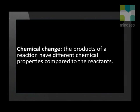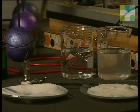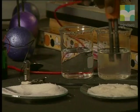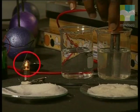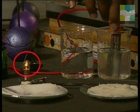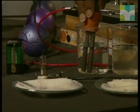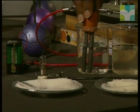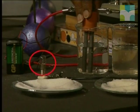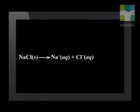We know that in a chemical change, the products of a reaction have different chemical properties compared to the reactants. When sodium chloride is dissolved in water, it conducts electricity because there are ions in the solution that are free to move. However, when sugar is dissolved in water, it does not conduct electricity because there are no ions in the solution that are free to move. This tells us that when sodium chloride dissolves, new substances are formed with different chemical properties. Solid sodium chloride breaks up into ions. We can therefore say that when sodium chloride dissolves, a chemical reaction takes place.